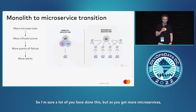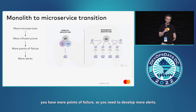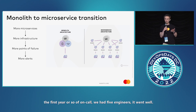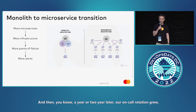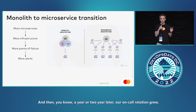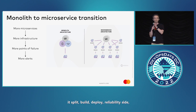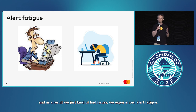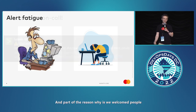As you get more microservices, you have more infrastructure and more points of failure, so you need to develop more alerts. We developed an alert suite and started our on-call rotation. For the first year or so, we had five engineers and it went well, but a year or two later our on-call rotation grew and split into build, deploy, and reliability sides.